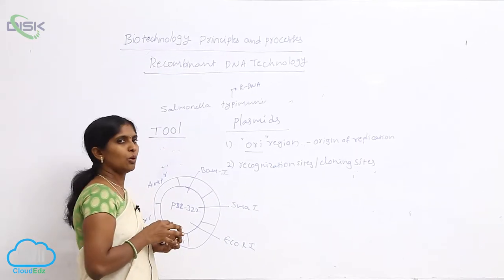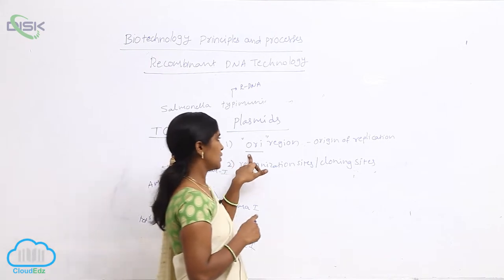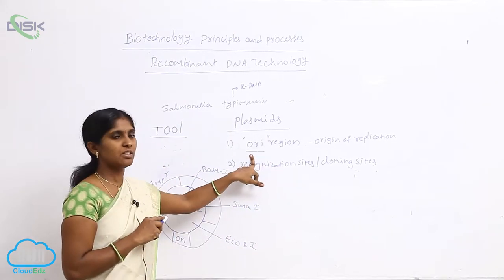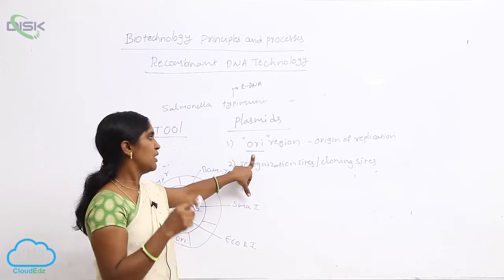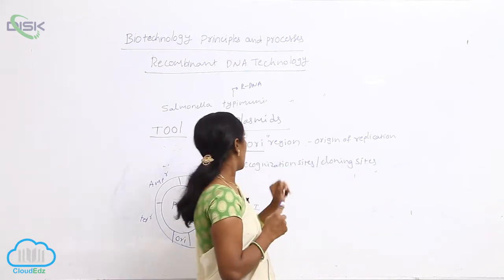The properties of plasmid include the ORI region, which is compulsory. In the presence of the ORI region, the plasmid as well as desired DNA are multiplying. That is the origin of replication site.